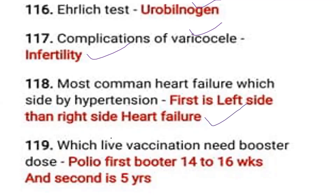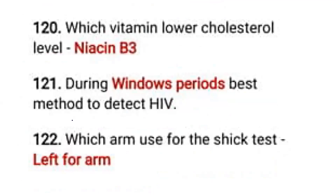Which live vaccine needs a booster dose? Polio — first booster at 14 to 16 weeks, second booster at five years. Which vitamin lowers cholesterol level? Niacin, or Vitamin B3.